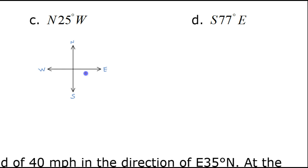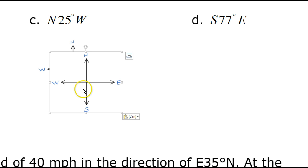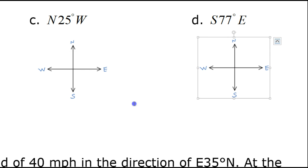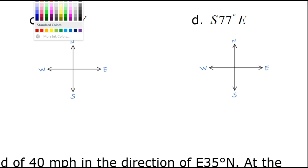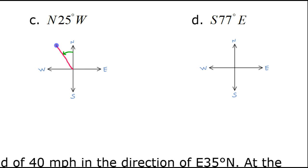Let's look at part C. So north 25 degrees west. This tells us to start at north, and then turn 25 degrees towards the west. So if I start here at north and I begin to turn 25 degrees in the direction of west, then my vector is going to end up right here. And this angle is a 25 degree angle.